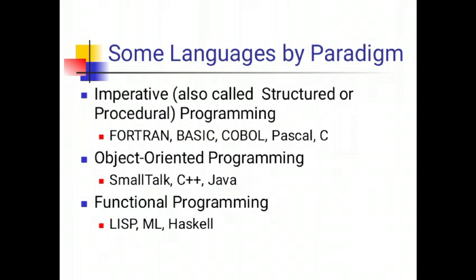Some languages used by the programming paradigms: Imperative, also called structured or procedural programming — examples are Fortran, Basic, COBOL, Pascal and C. Object-oriented programming paradigm — examples are Smalltalk, C++, and Java. Functional programming examples are LISP, ML and Haskell.